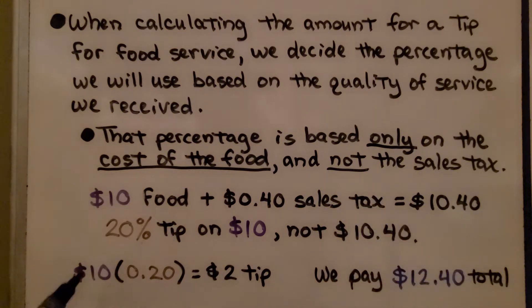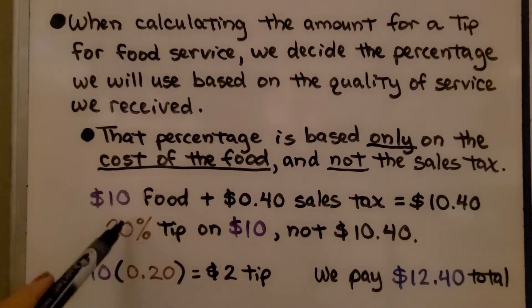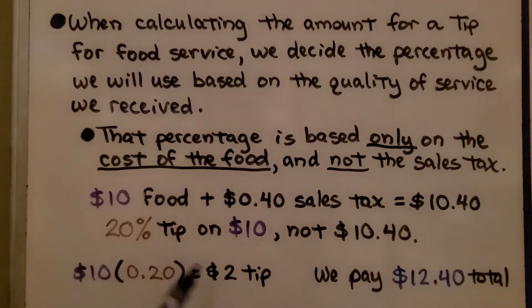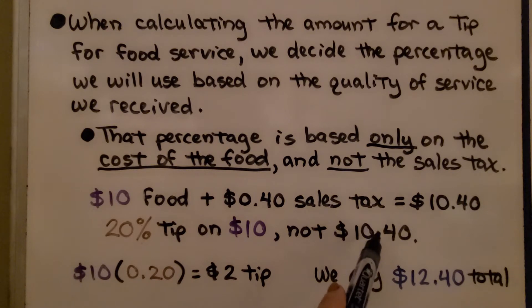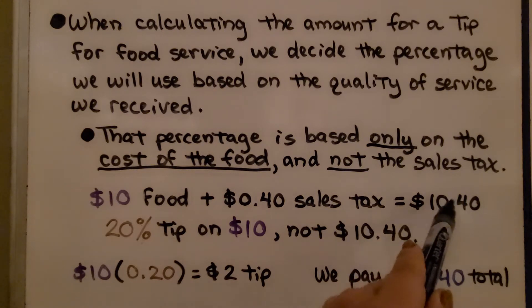We do $10 times 20% written as a decimal. That tells us we're going to leave a $2 tip. We pay $12.40 — $2 more than the total price with tax.